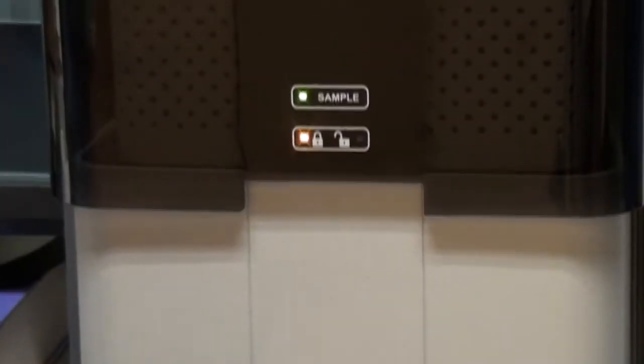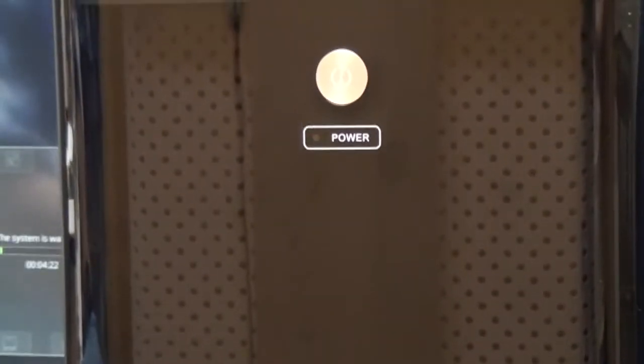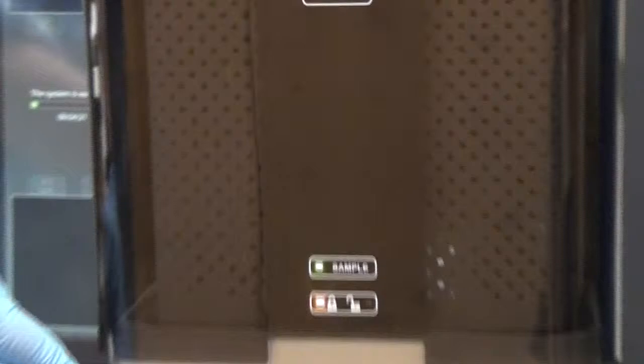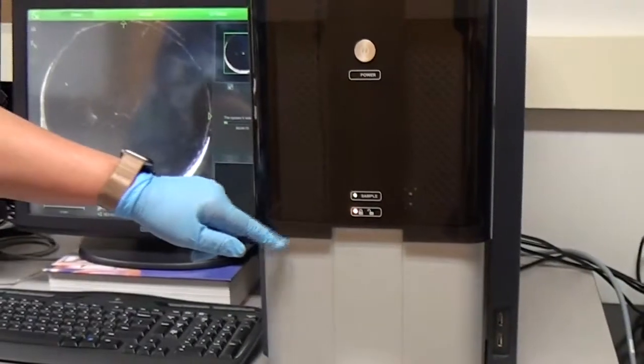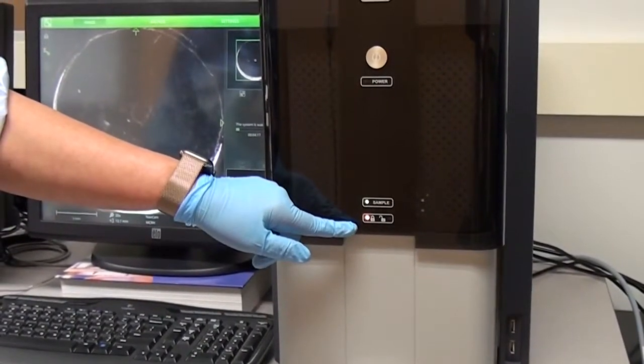The green light on the front of the SEM indicates that the sample is loaded correctly. And now it is in the locked position for imaging.